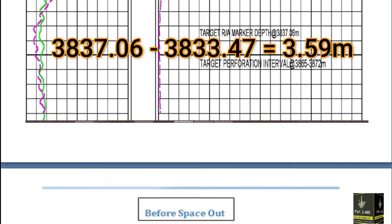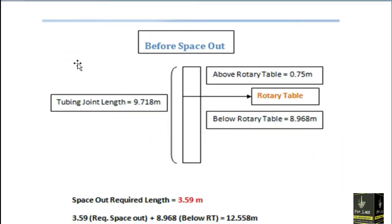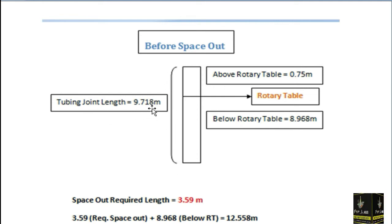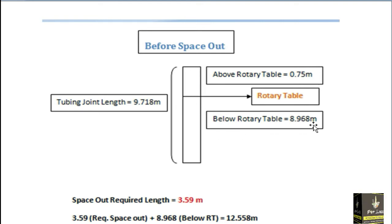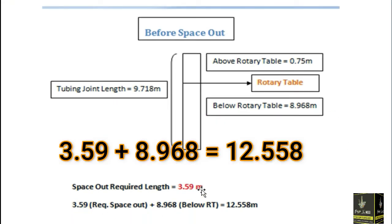For the space out, the required length is 3.59 meters — the RA marker needs to be run 3.59 meters deeper. Our tubing joint size is 9.718 meters. At the rotary table, the length above the rotary table is 0.75 meters and below the rotary table is 8.968 meters. The required space out of 3.59 meters plus 8.968 meters equals 12.558 meters — this is the total length we need to fulfill below the rotary table.